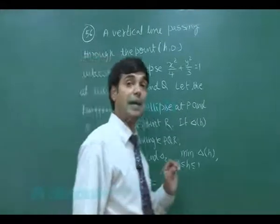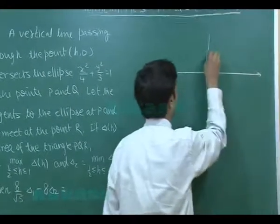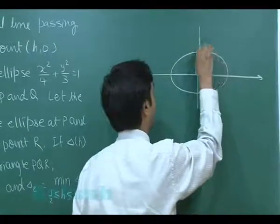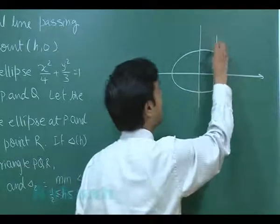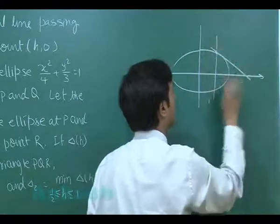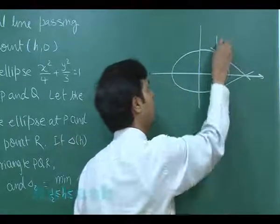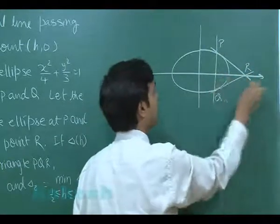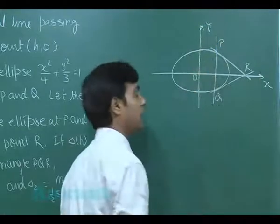So let us draw the ellipse first. A vertical line intersecting the ellipse at two points P and Q. Tangents are drawn at P and Q. This is the point (h, 0). This is x-axis, y-axis and origin.